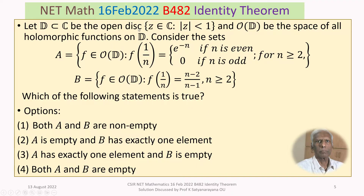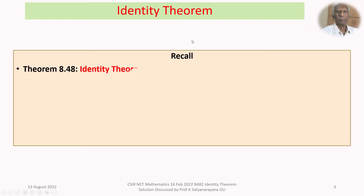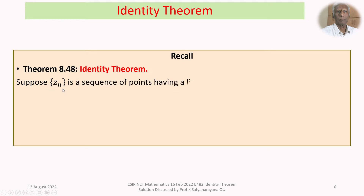So we have an open disk mod Z less than 1, and O of D is the space of all holomorphic, that is analytic, functions defined on D. We have two sets A and B, defined as described, and we must decide which statement is true. Before getting into the discussion, let us recall the Identity Theorem.